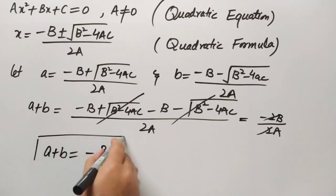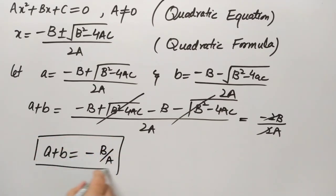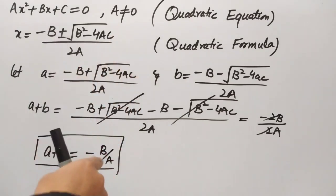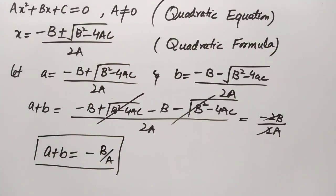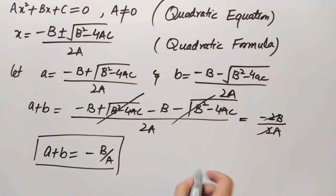So for any quadratic equation, the sum of the roots is equal to −b/a. Now for the question given, if we put the values in directly, we get a + b = 16. We do not need to solve it by finding individual roots.